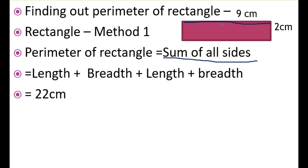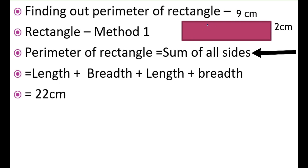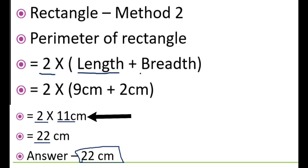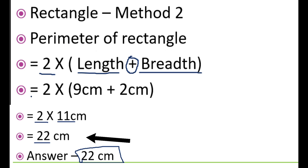Now let's find out the perimeter of a rectangle. Here the length is 9 cm and the breadth is 2 cm. Method 1: the formula is the sum of all sides — length plus breadth plus length plus breadth — which equals 22 cm. Method 2: we multiply 2 by the sum of length and breadth, that is 2 multiplied by 9 plus 2 cm, which equals 2 into 11 cm, and that is 22 cm.